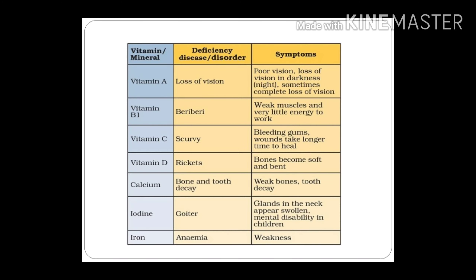Here you can see a chart. Deficiency of Vitamin A causes loss of vision, with symptoms of poor vision. Deficiency of Vitamin B1 causes beriberi, which weakens your muscles. Deficiency of Vitamin C causes scurvy, with symptoms of bleeding gums.